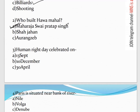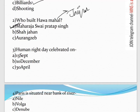Maharana Pratap Singh is a famous ruler of Rajasthan. Shah Jahan built the Taj Mahal, Red Fort, and the Lahore Pavilion. Aurangzeb built a big mosque called the Pearl Mosque.